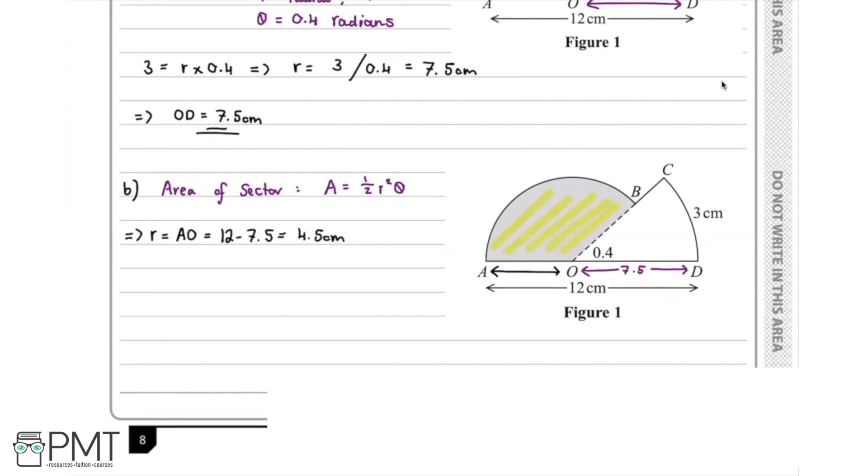We can do the same for the angle as well. We can see here that this angle will be the angle that we need to use as theta in our equation. We know that these two angles will add to 180 degrees, or in this case pi. So we have that pi equals theta plus 0.4, which means that theta is going to be equal to pi minus 0.4.